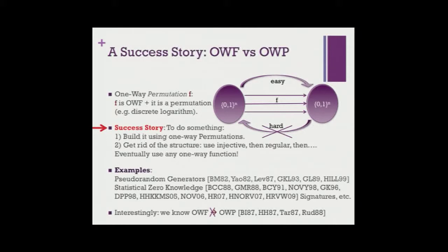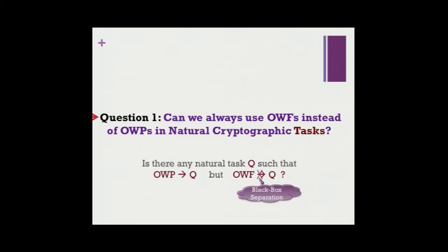There is a success story about these two primitives. Over the history of crypto, we started by doing something based on the assumption that one-way permutations exist, and by hard work we relaxed this assumption — first to one-to-one one-way functions, then regular one-way functions. The examples are numerous: pseudorandom generators, statistical zero-knowledge, signatures. But what makes this even more interesting is that we know from the early 80s there is no direct black-box way to go from one-way functions to one-way permutations — they are qualitatively separated.